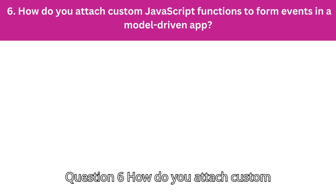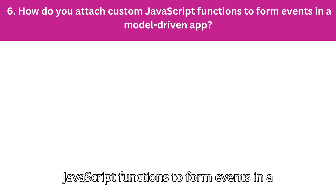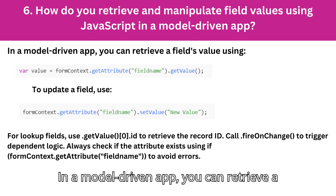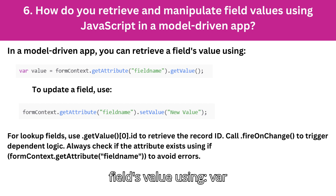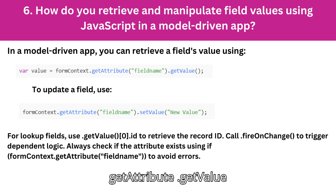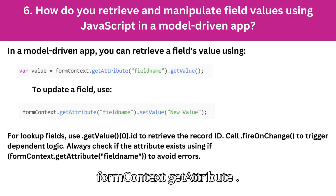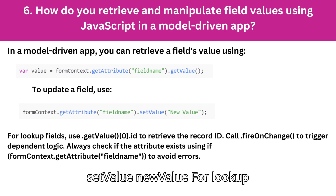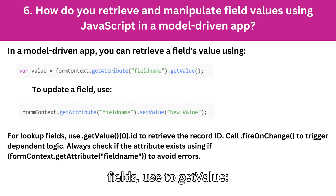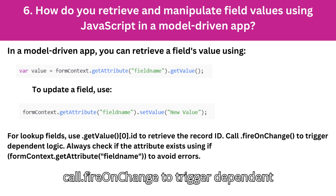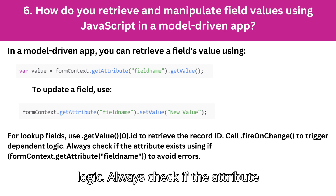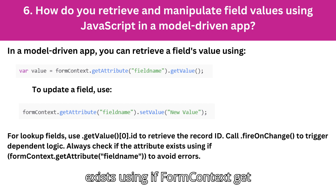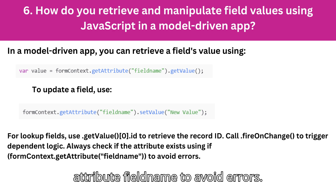Question 6: How do you attach custom JavaScript functions to form events in a model-driven app? In a model-driven app, you can retrieve a field's value using var value equals formContext.getAttribute(fieldName).getValue(), and to update a field, use formContext.getAttribute(fieldName).setValue(newValue). For lookup fields, use getValue()[0].id to retrieve the record ID. Call fireOnChange() to trigger dependent logic. Always check if the attribute exists using if formContext.getAttribute(fieldName) to avoid errors.